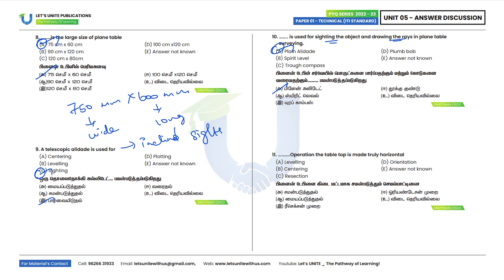Eleventh question: Which operation makes the table top truly horizontal? Making the plane table truly horizontal is called leveling the plane table. Option A — leveling — is the correct answer.